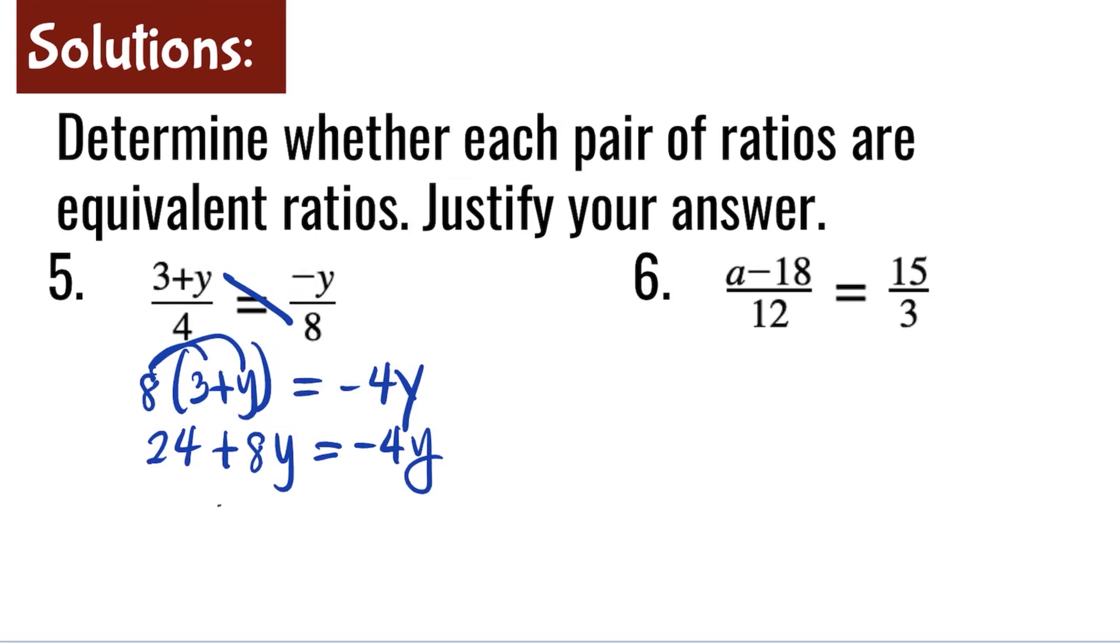Now I will isolate the variable y's on the right side. The inverse of plus 8y is minus 8y. So left side is 24. 8y and negative 8y is 0. This is equal to negative 4y minus 8y which is negative 12y.